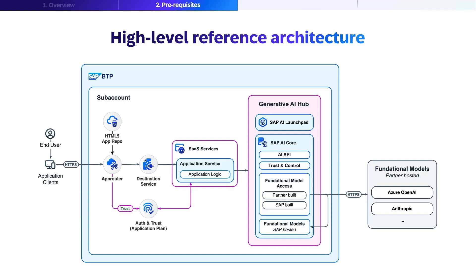Authentication and trust are managed through auth and trust components. From there, another destination service forwards the request to the generative AI hub, a central component of this architecture. The generative AI hub contains two key elements: SAP AI Launchpad for management and monitoring, and SAP AI Core, which provides AI APIs for programmatic access, trust and control mechanisms, and foundational model access. SAP AI Core can connect to both SAP-hosted foundational models and partner-hosted models like Azure OpenAI and Anthropic through secure HTTPS connections.